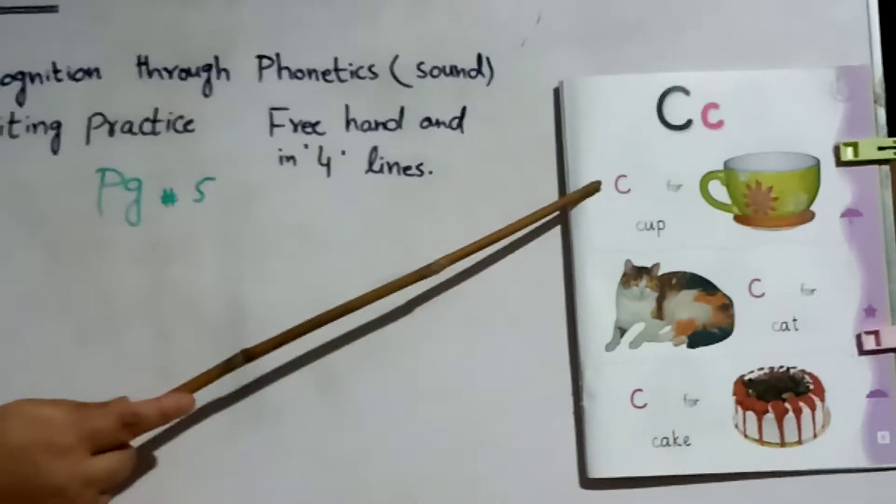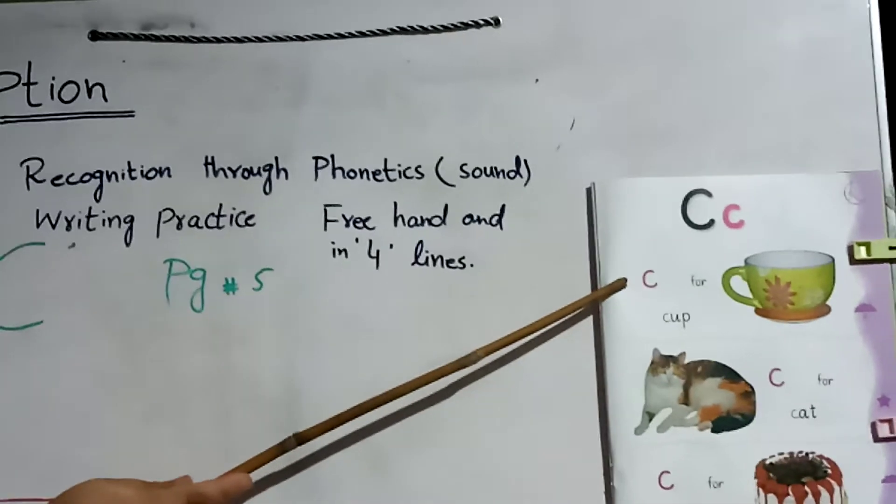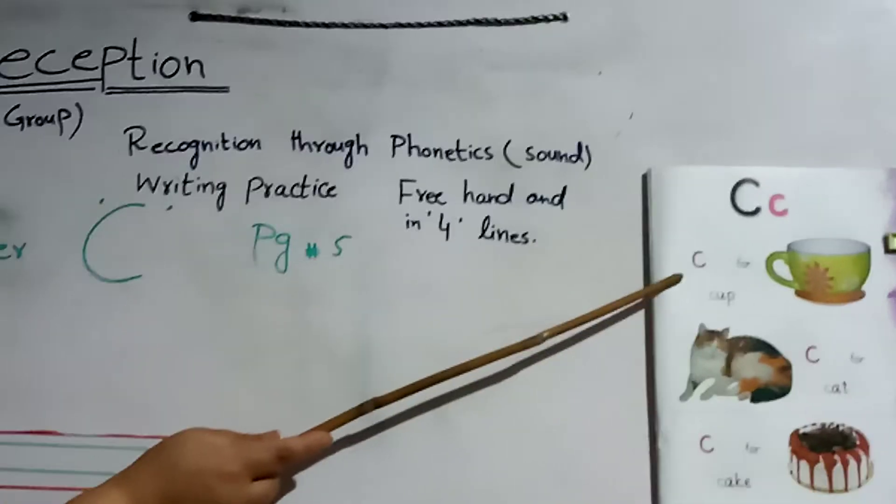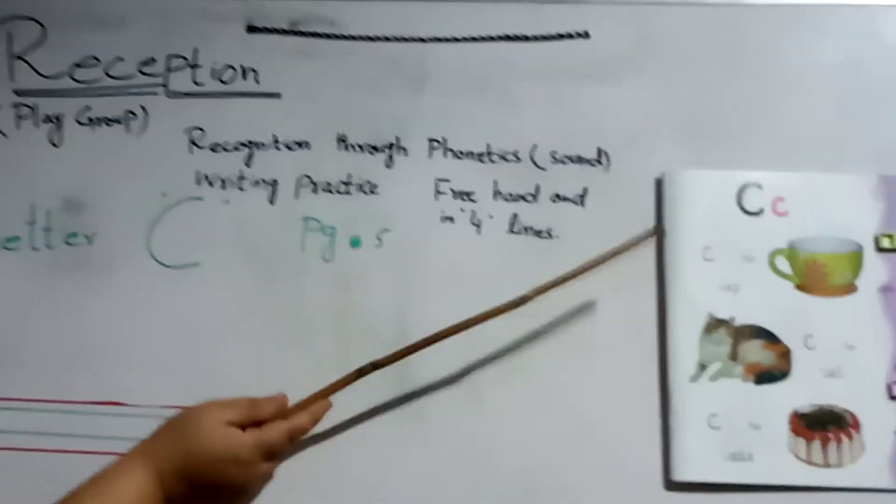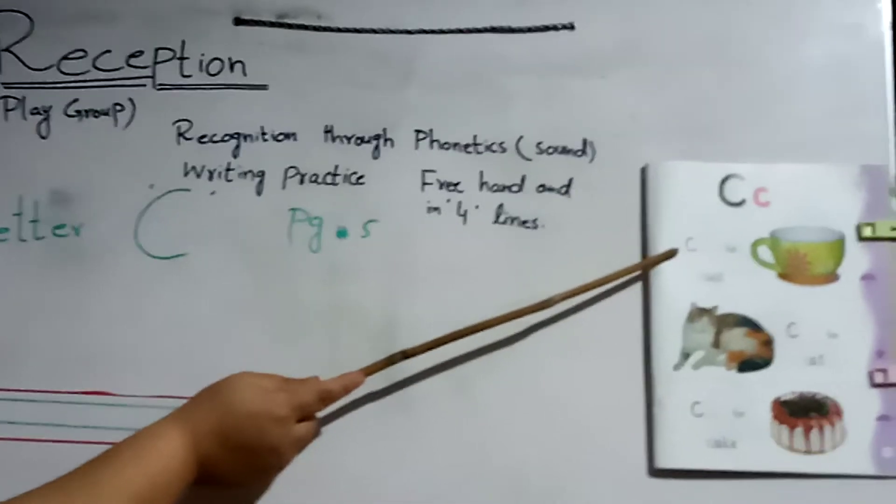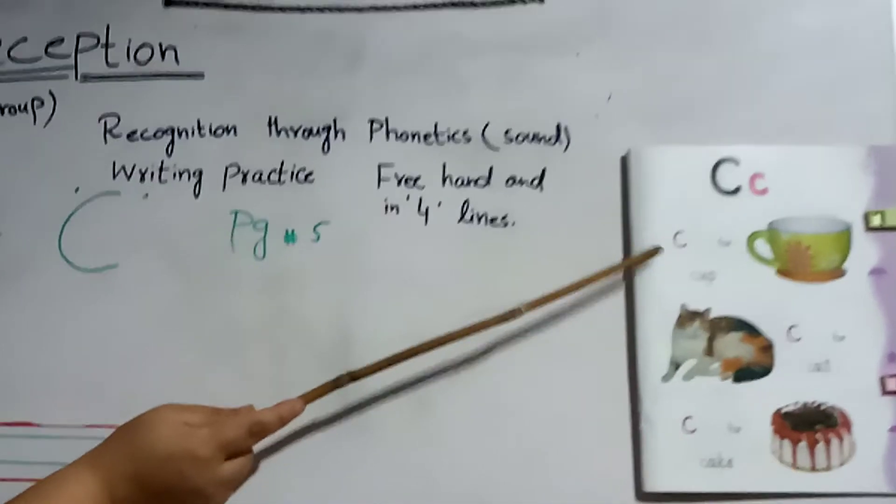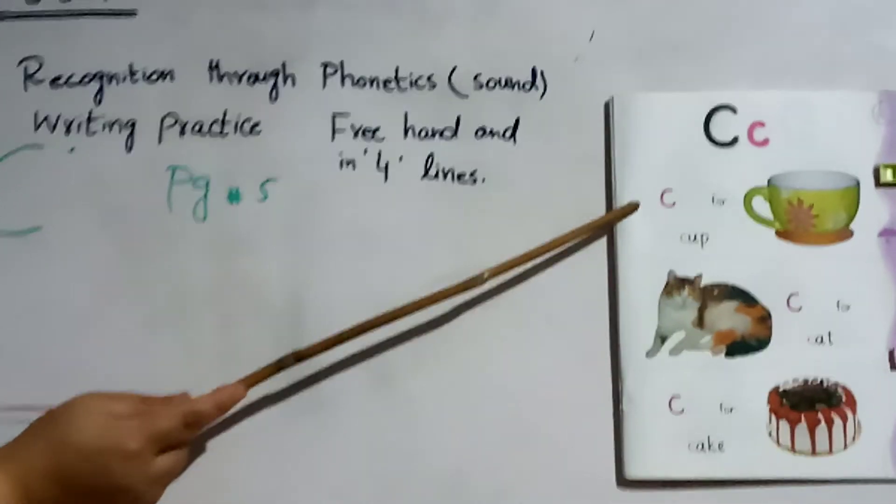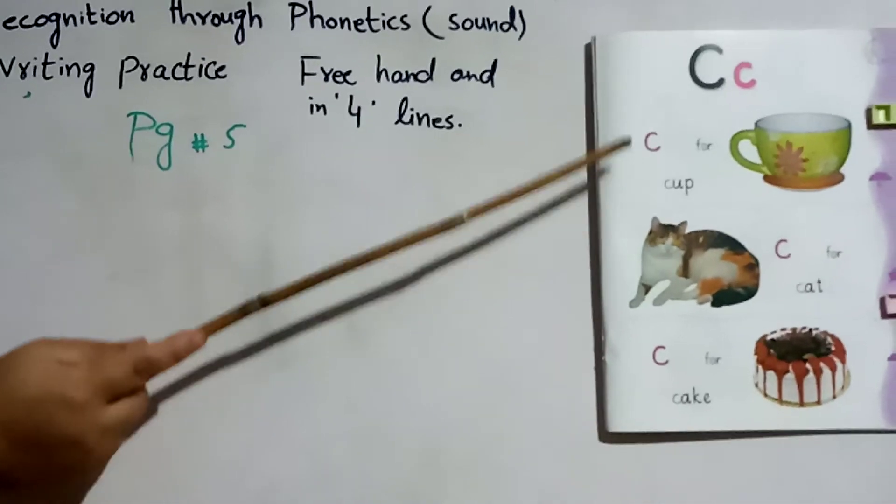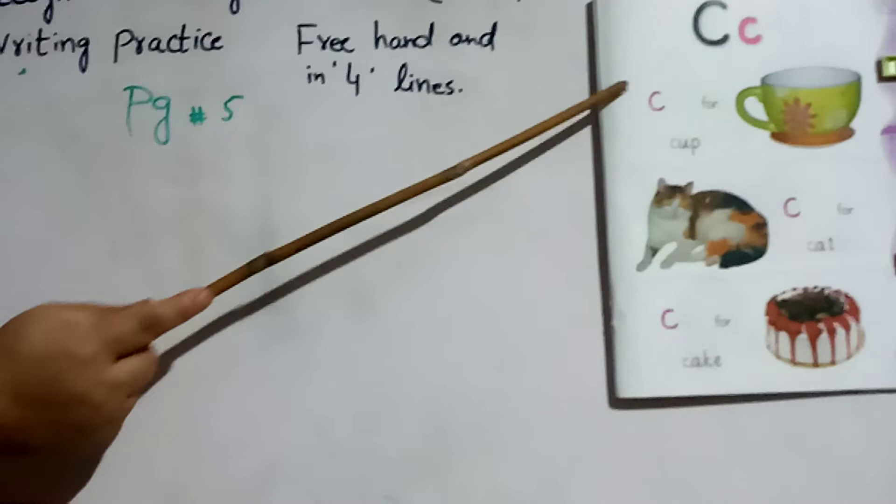What is this? C. Its sound is C. C. Pronounce it with me. C. Its sound is C. C cup, C cat, C cake.